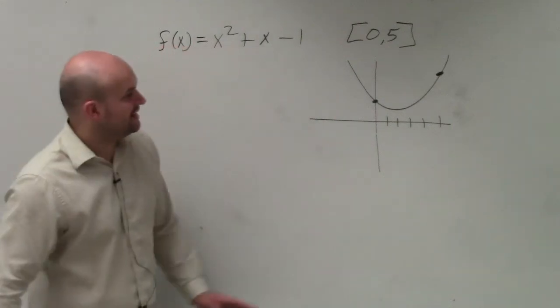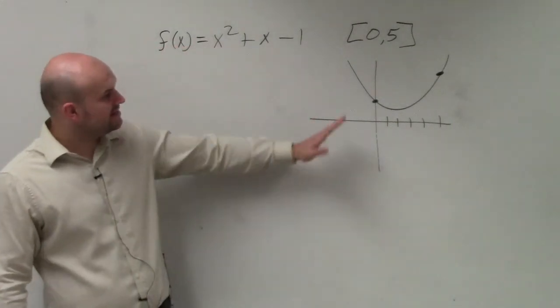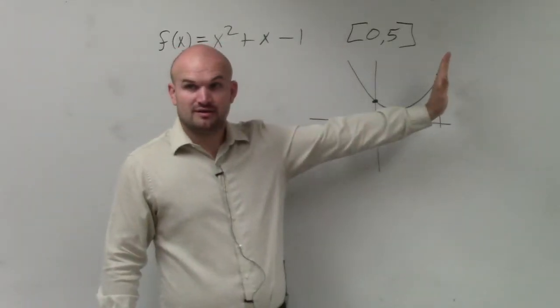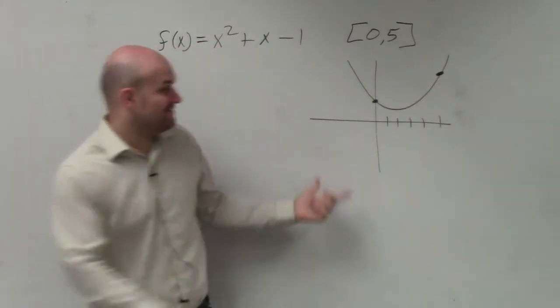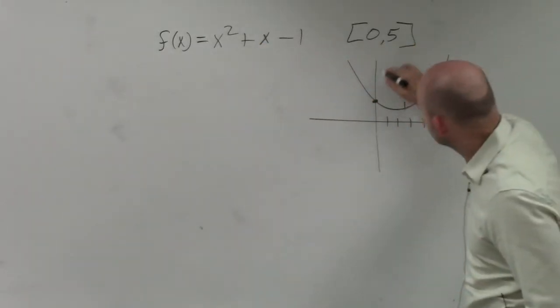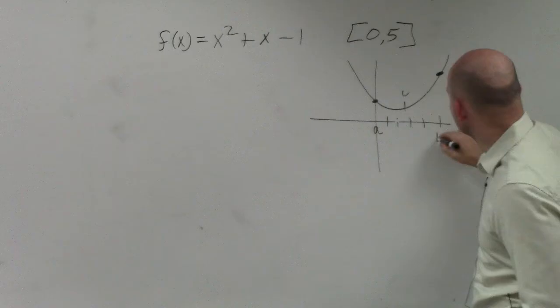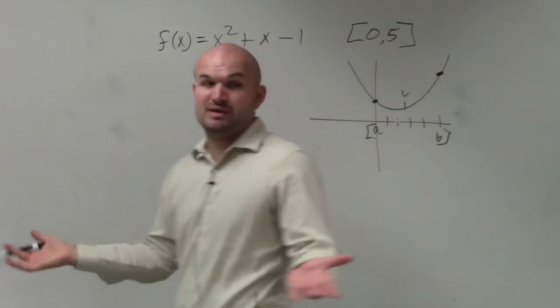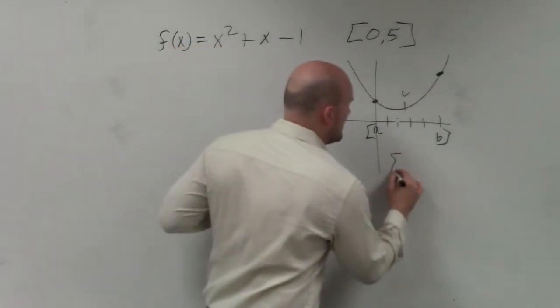So what they're saying is, the Intermediate Value Theorem is basically saying if you have a closed interval on a continuous function, that there exists a value c in between these two intervals, where we're going to say this is a and this is b. What the Intermediate Value Theorem says is there exists a value c that is in between our closed interval a comma b.